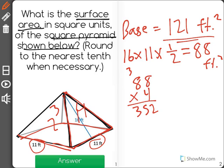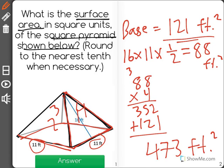Now I cannot forget to add back in the area of the base, and I will get a total surface area for this square pyramid of 473 square feet for the correct answer.